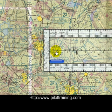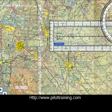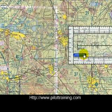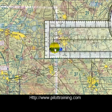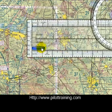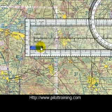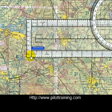Let's take a look at this virtual plotter. We're going to fly from this airfield here, which is Byron, to Modesto, which is here. The way we do that is we drag the plotter — this virtual plotter — over Byron Airport so that the zero nautical miles scale is here.